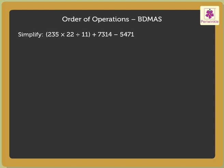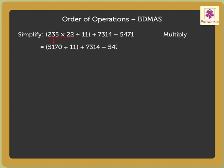Step 1: Solve the brackets. Moving from left to right in the brackets, we first multiply and then divide. So, we first multiply 235 by 22 to get 5170. So, we are left with 5170 divided by 11 in the brackets, plus 7314 minus 5471.